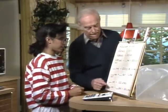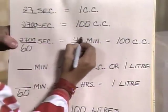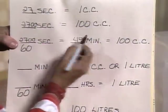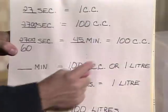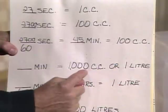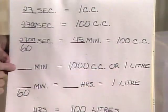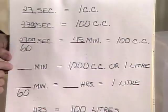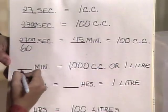2,700 divided by 60 equals 45. So 45 minutes for 100 cc. Now we're going to multiply by 10. 45 times 10 — just add a zero — gives 450 minutes. And that's for one liter.